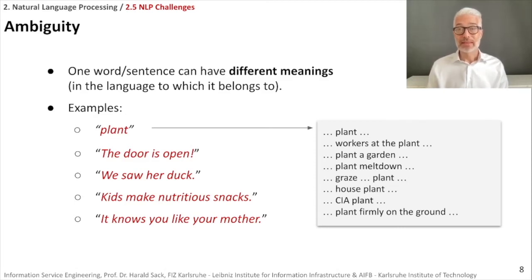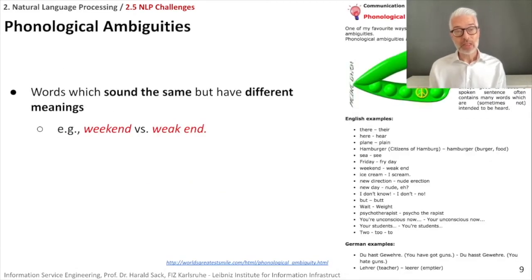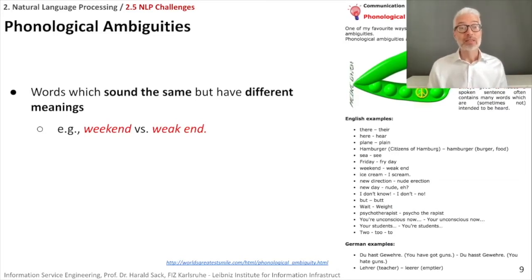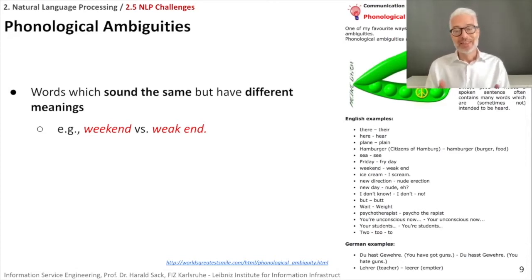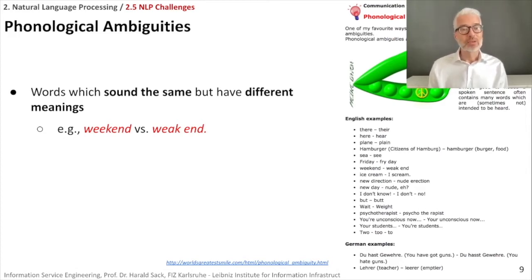Let's take a more organized approach to ambiguity. Where can we find ambiguity, and on which level? We start first with phonological ambiguity — words which sound exactly the same or more or less the same but have different meanings. For example, 'weekend' and 'week end' sound more or less the same, like 'there' and 'their,' or 'here' and 'hear.' There's a website collecting exactly these phonological ambiguities for English — it's sometimes really funny.